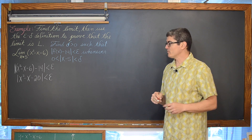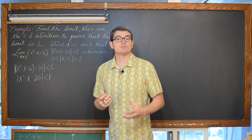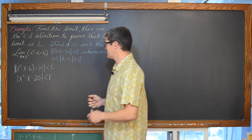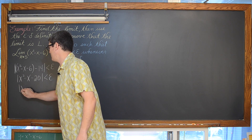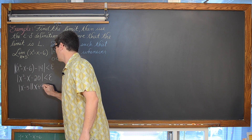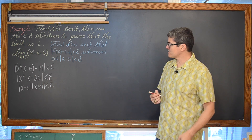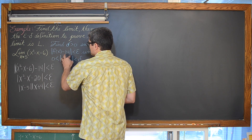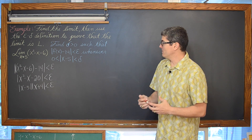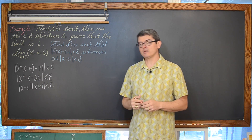That left-hand side is factorable, and when you have an expression inside an absolute value symbol that is factorable, you can still factor — just make sure you leave each factor in its own absolute value symbol. So we have the absolute value of x minus 5 times the absolute value of x plus 4. We are trying to isolate the absolute value of x minus 5 and manipulate the original |f(x) - L| statement to match the |x - c| expression like we did in the last problem.